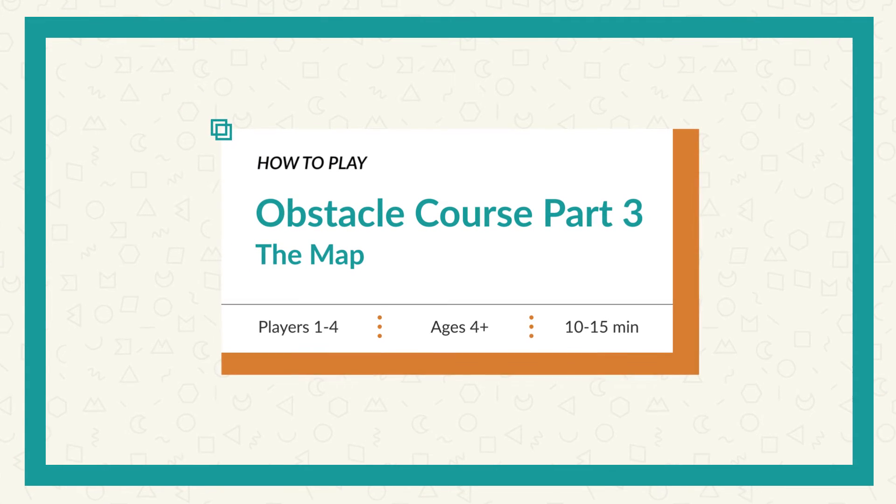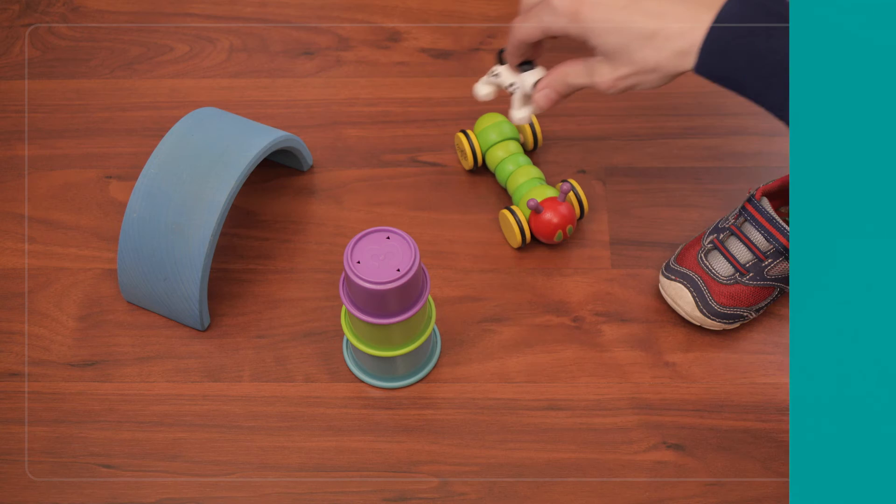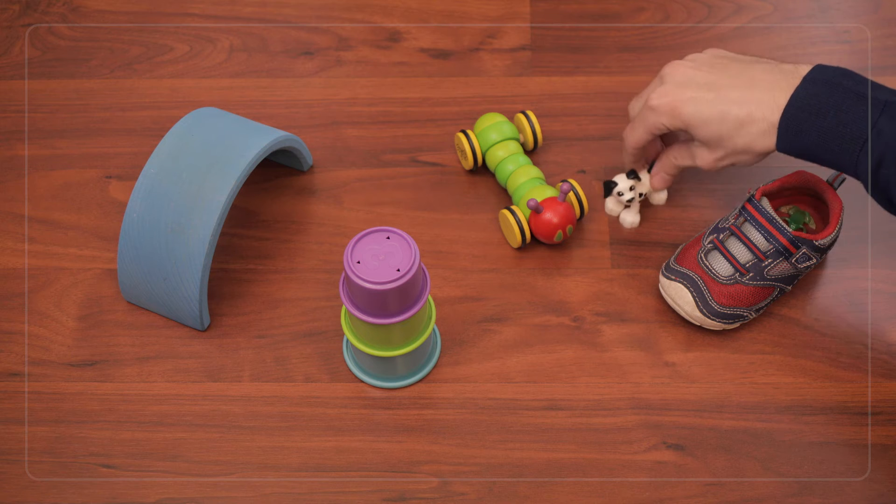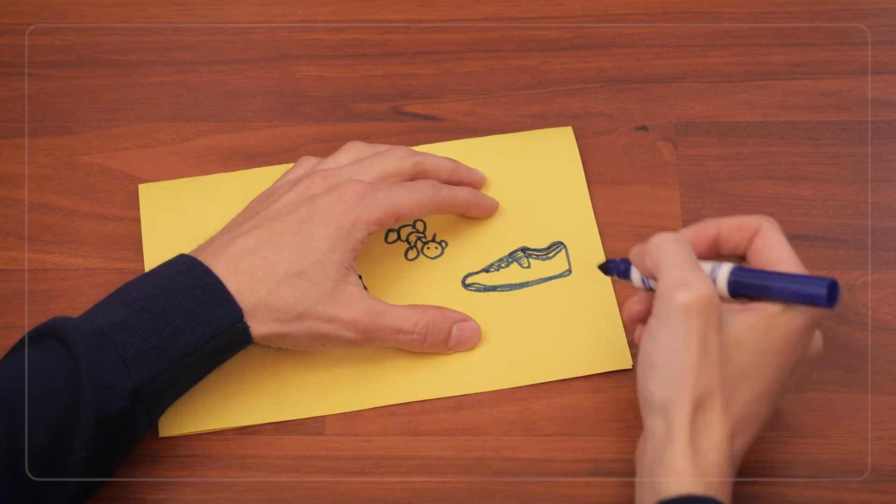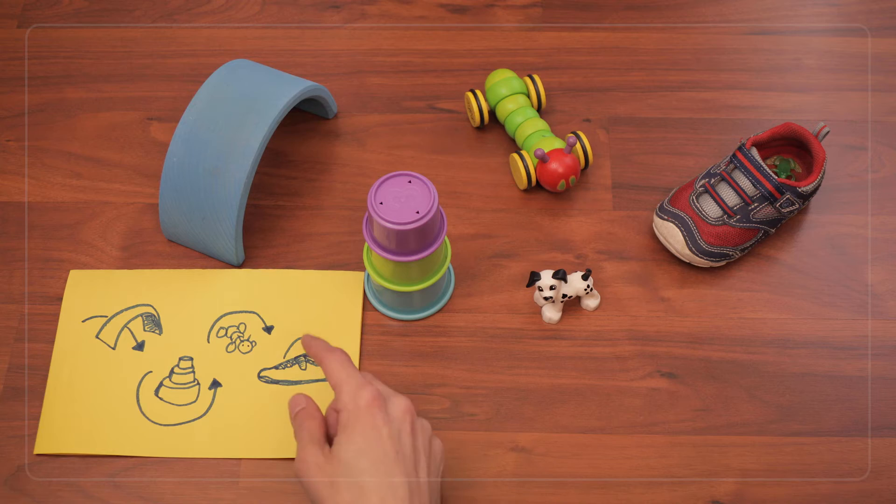In Part 3 of the Obstacle Course game, we'll take our three-dimensional obstacle course from the previous parts and turn it into a two-dimensional map that we can use to talk about our path through the course.